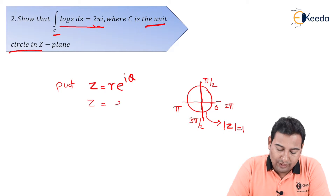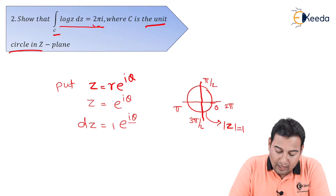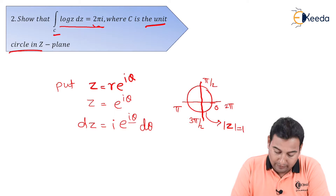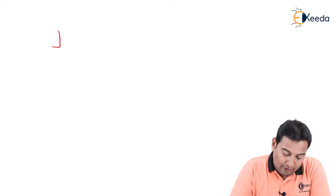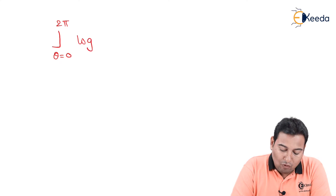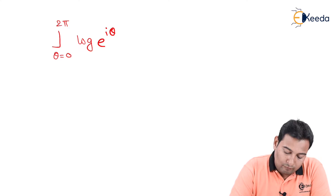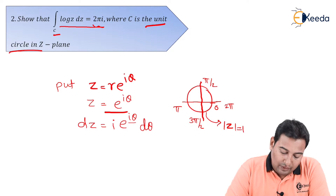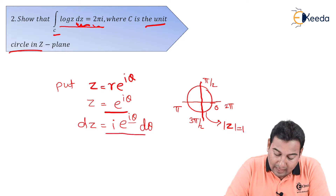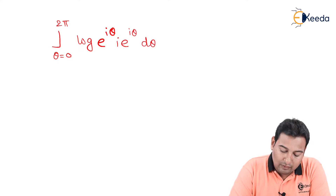Differentiating z = e^(iθ): dz = e^(iθ) · i dθ, by the chain rule. Now substituting into the integral with θ from 0 to 2π, we have log z = log(e^(iθ)) and dz = ie^(iθ) dθ.